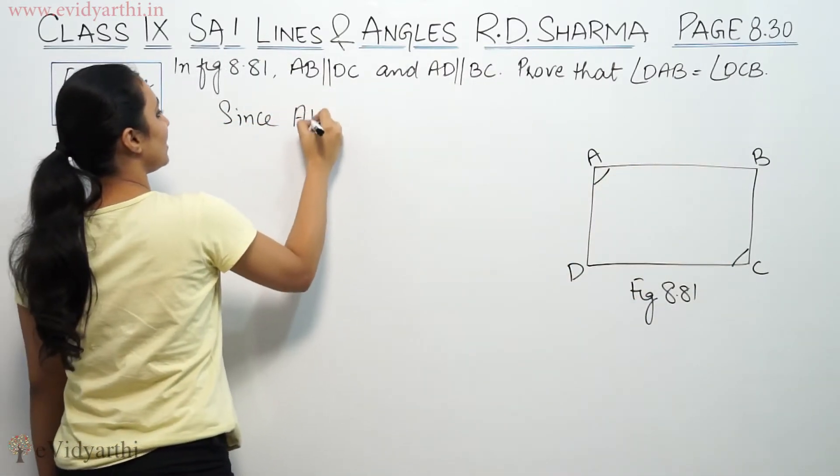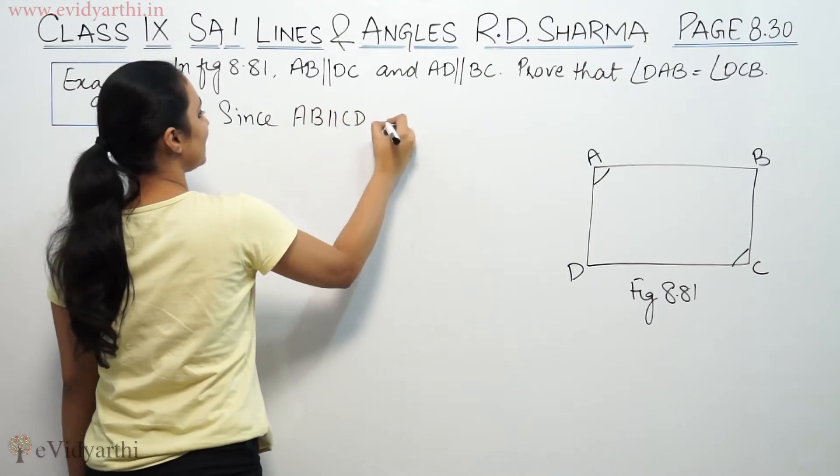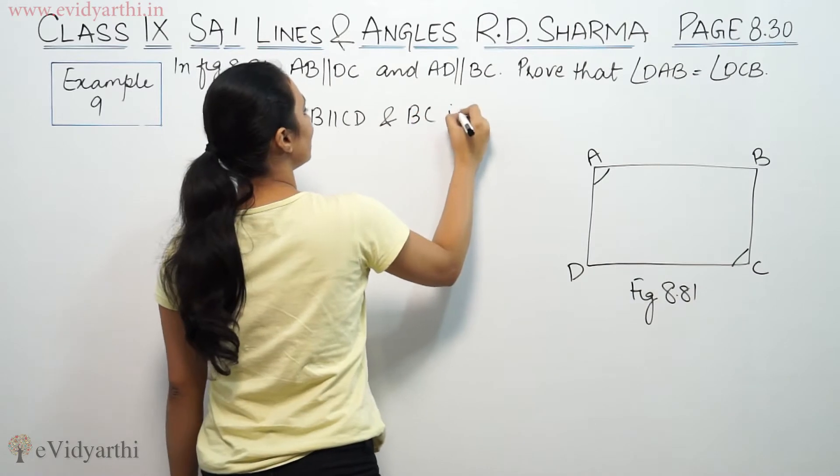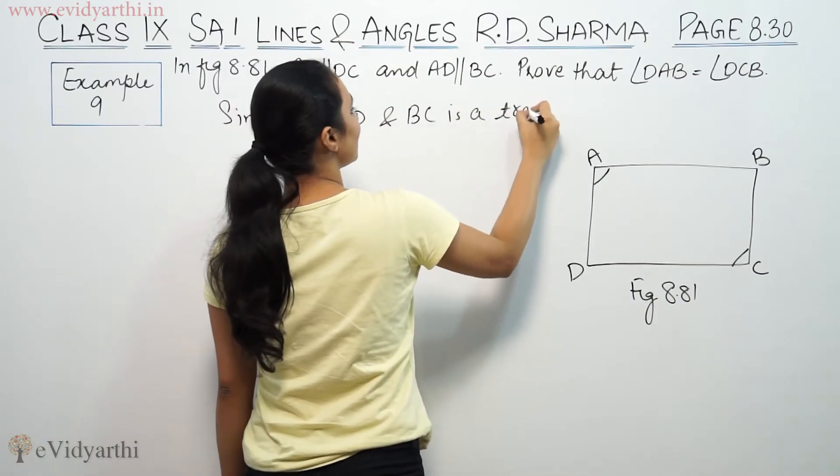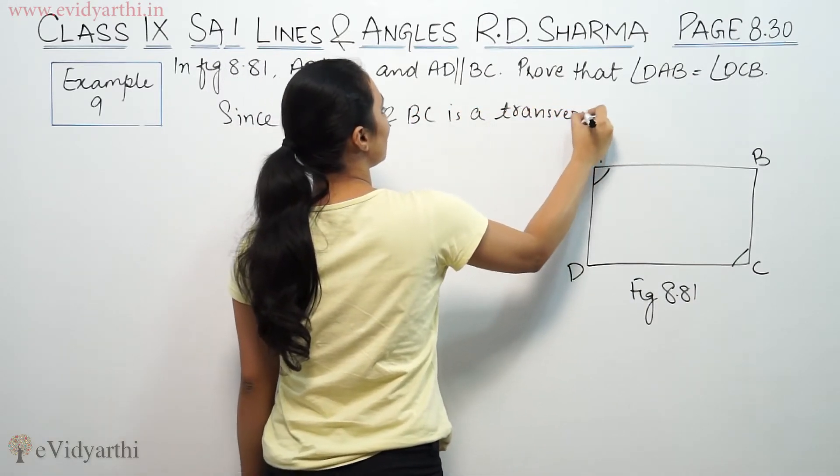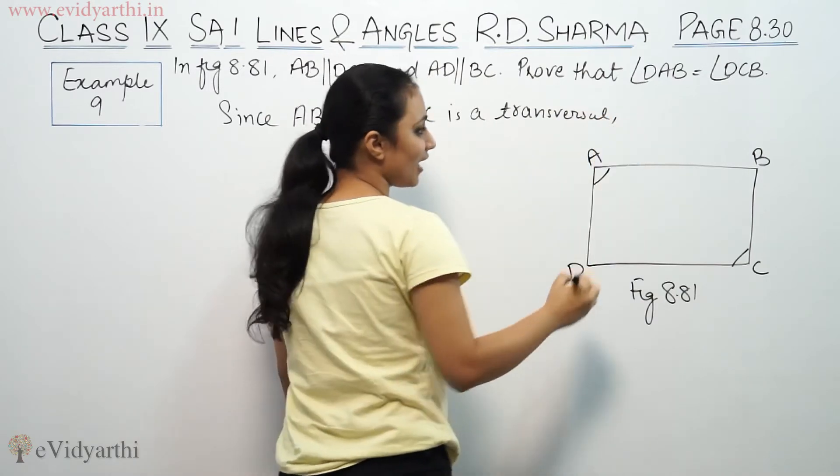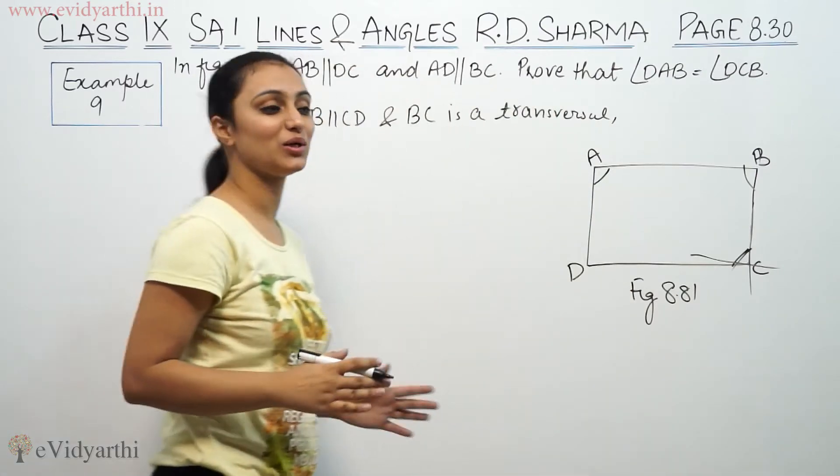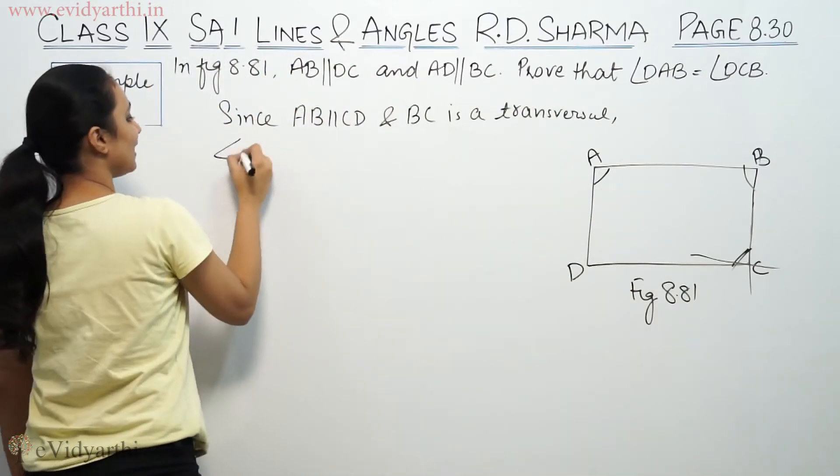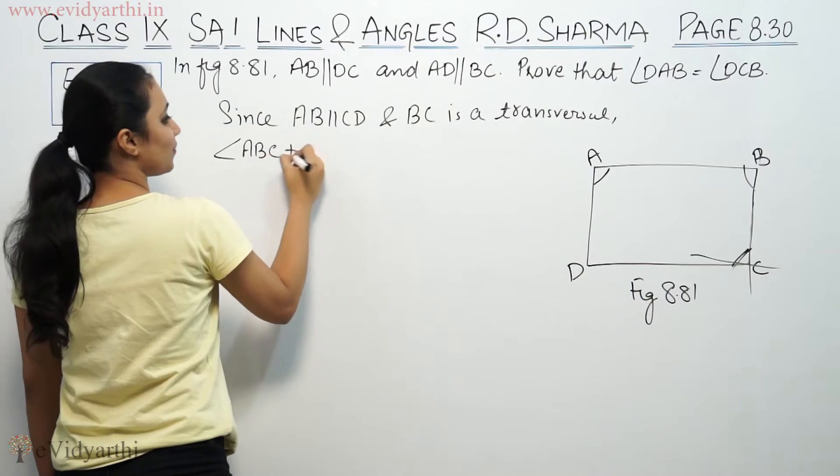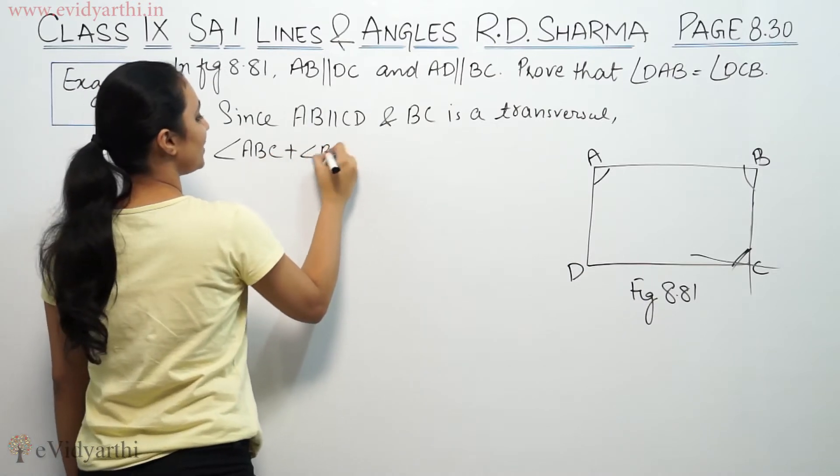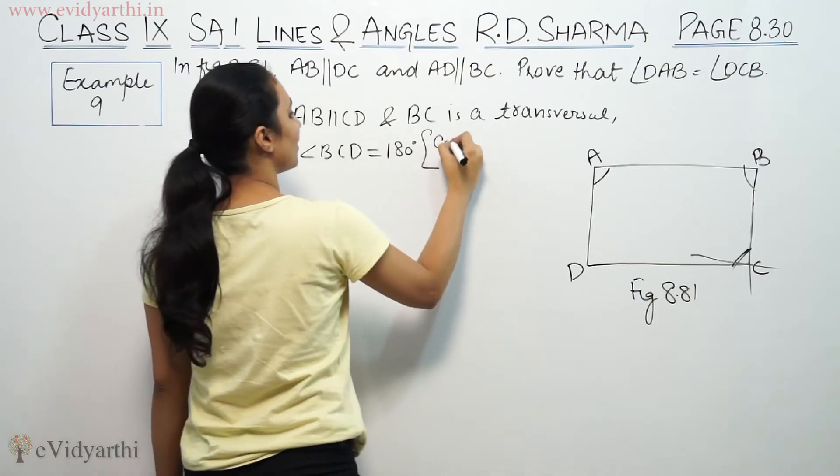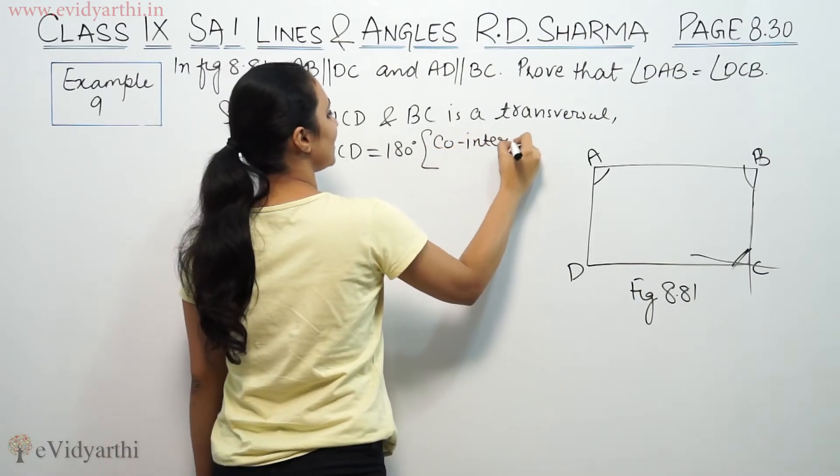Since AB is parallel to CD and BC is a transversal, this angle plus this angle should be equal to 180 degrees. Angle ABC plus angle BCD equals 180 degrees, co-interior angles.